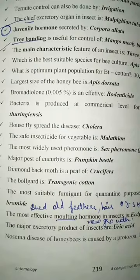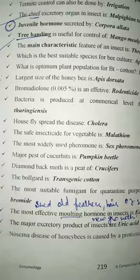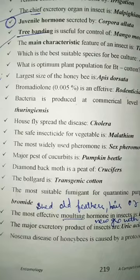Bollguard is transgenic cotton. Bt cotton was used to control the population of bollworms in cotton crops, so bollguard is a type of transgenic cotton.